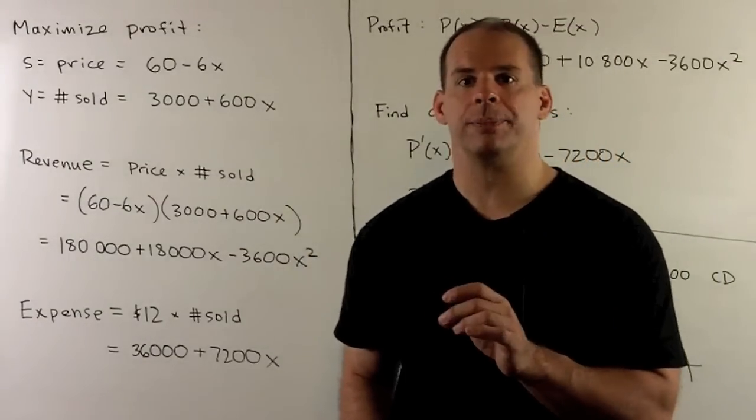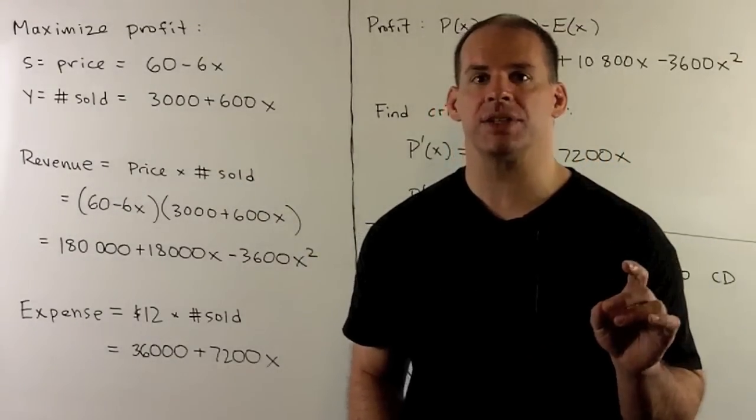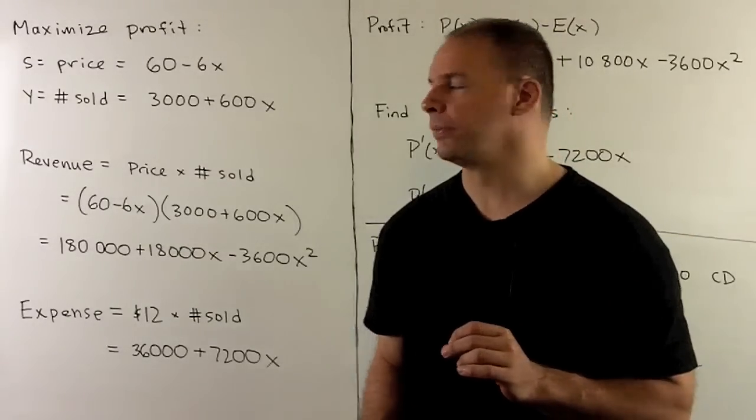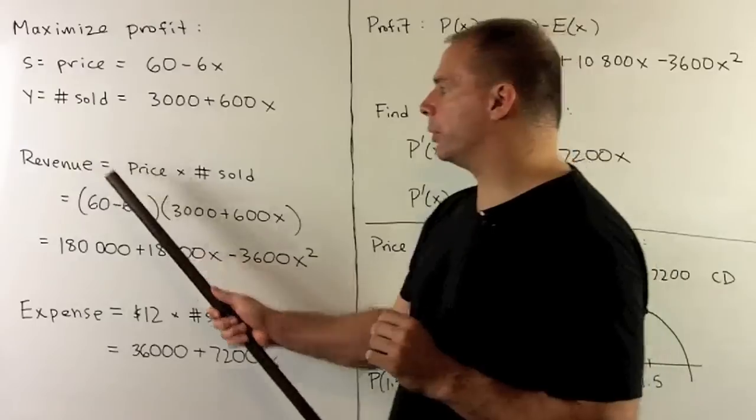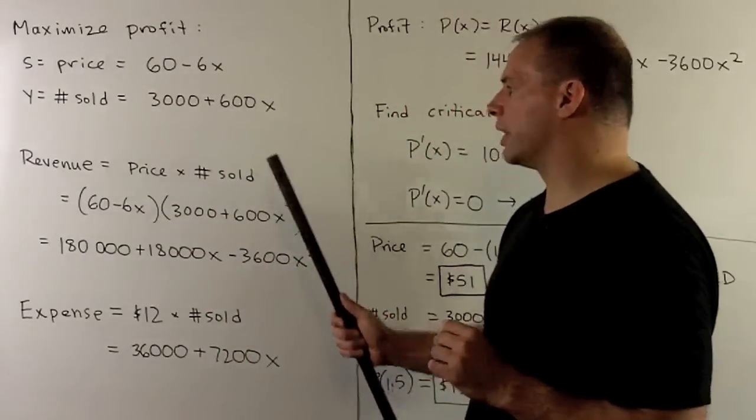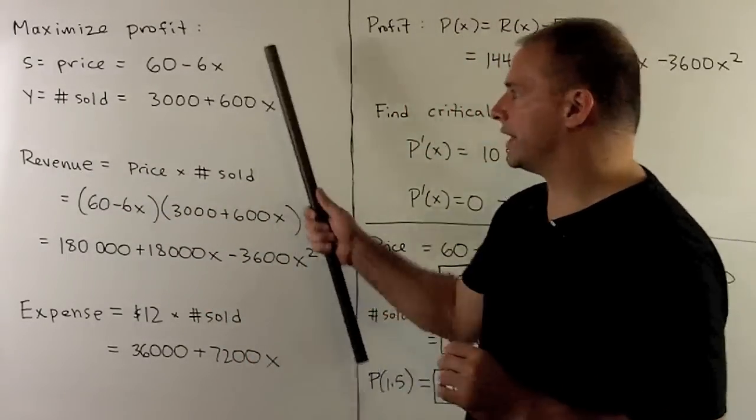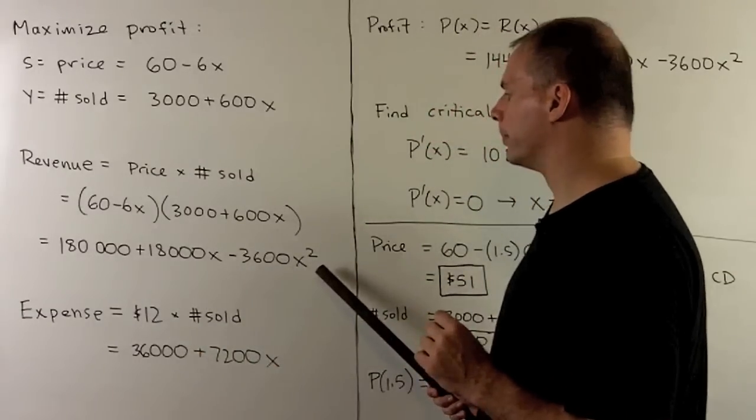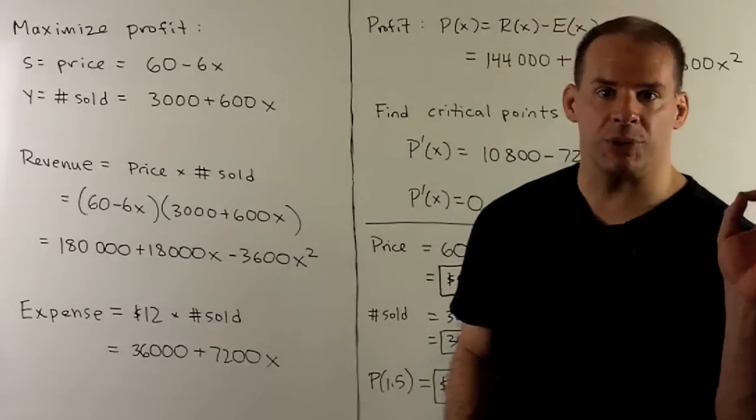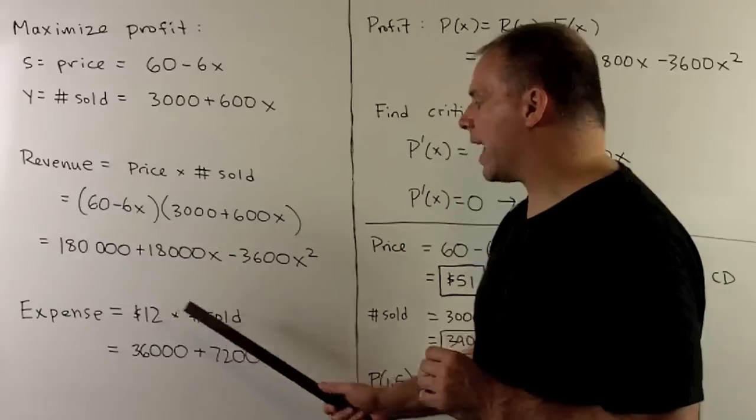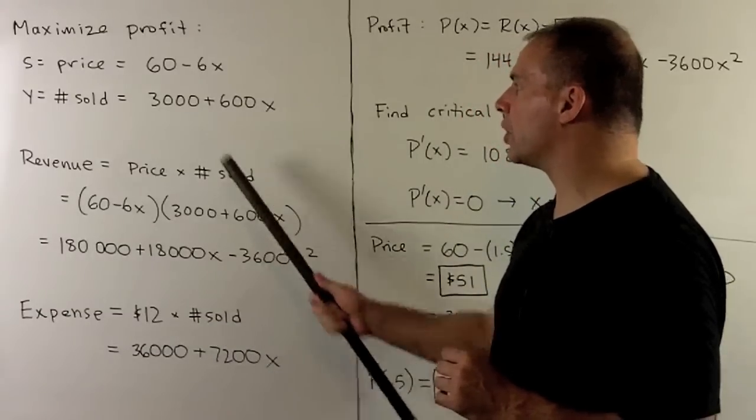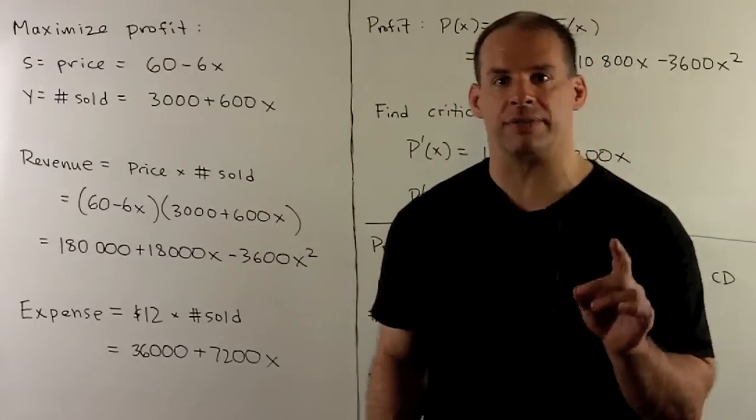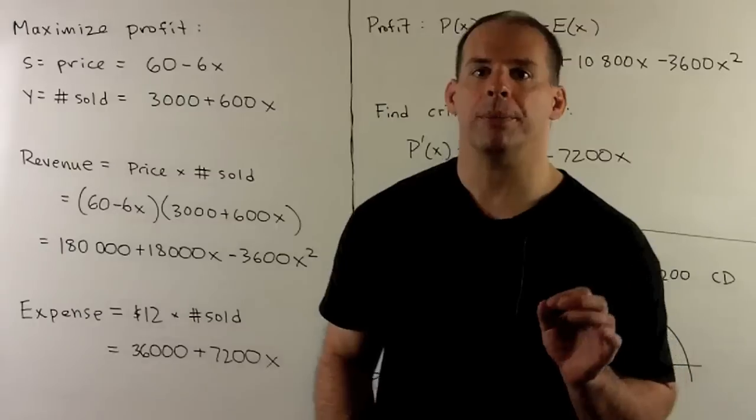Our formula for profit is revenue minus expense, so I want to put revenue and expense in terms of X also. For revenue, it's ticket price times number of tickets sold. I take each of these items and multiply them out, which gives me this polynomial here. For expense, take our $12 and multiply by the number of tickets sold. Then we get another polynomial. If I want profit, we just take their difference. So for our final profit function, we get this polynomial here.